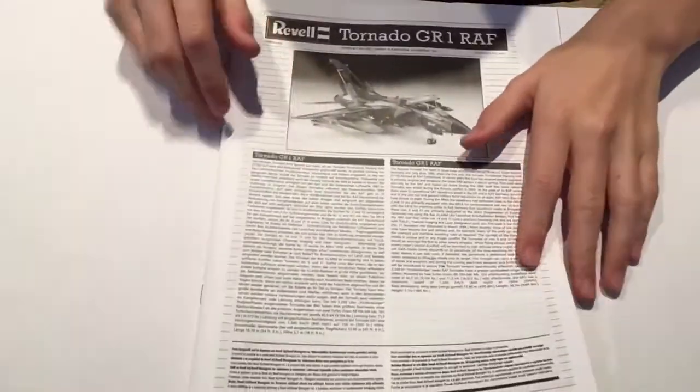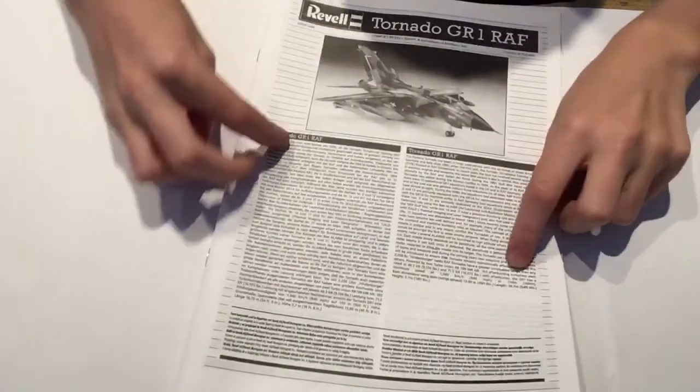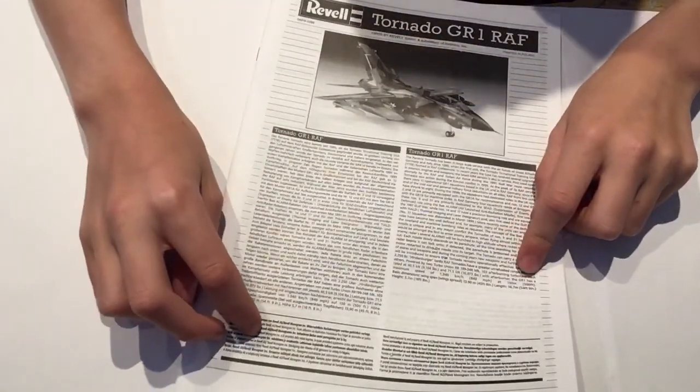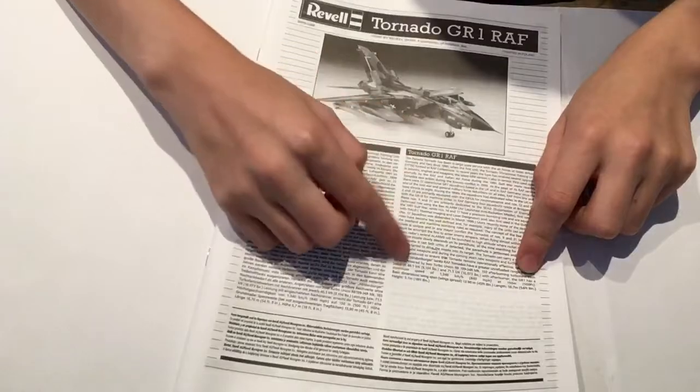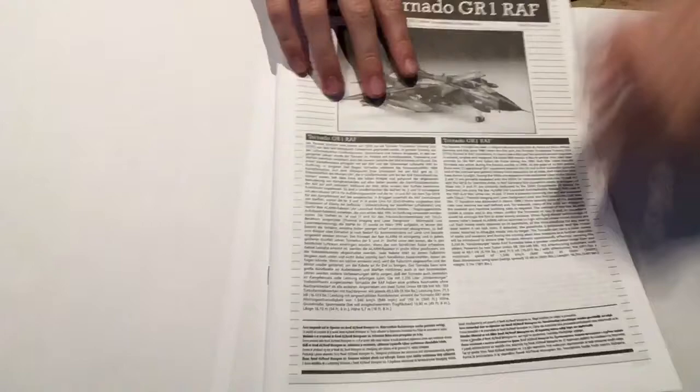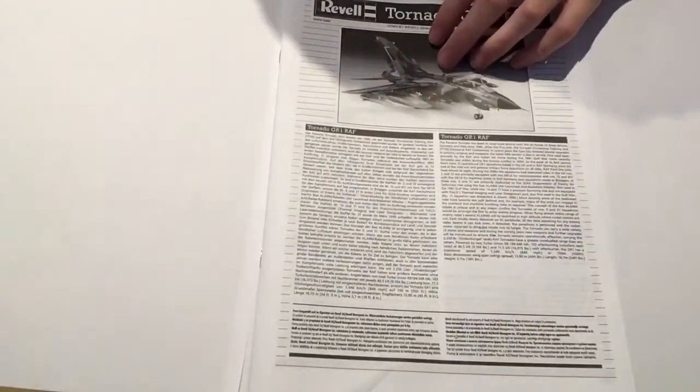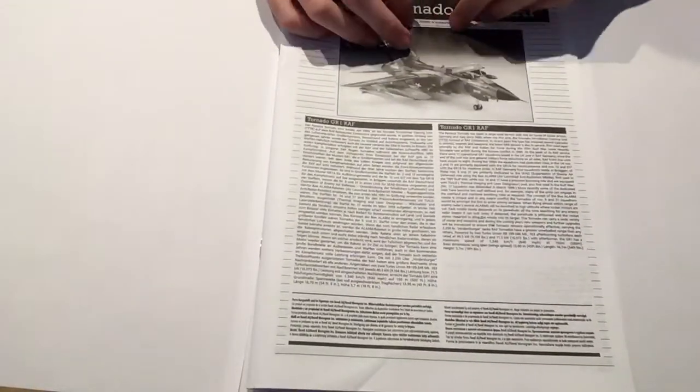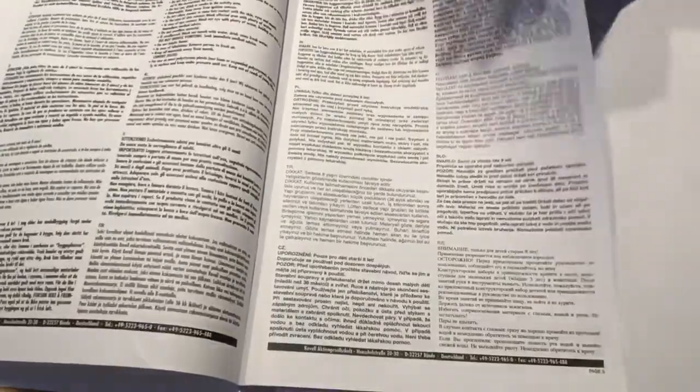Here is the instruction booklet manual for the model kit. There's information on it in German and here it is in English. It's a flat booklet, like an actual book. I didn't know Revel made magazines now but they do.